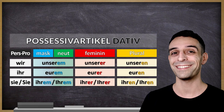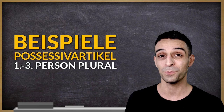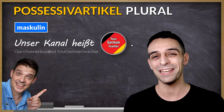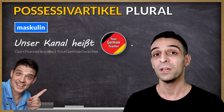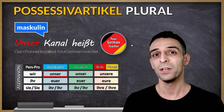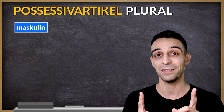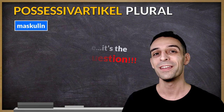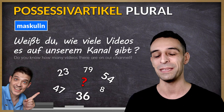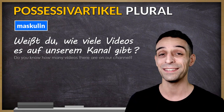Now you know all the possessive articles in dative case, and I will make more examples for the plural forms. Unser Kanal heißt Your German Teacher. Kanal is masculine and the subject, so it's nominative case: unser. You already know that this channel is called Your German Teacher. Here is the second homework question: Weißt du, wie viele Videos es auf unserem Kanal gibt?